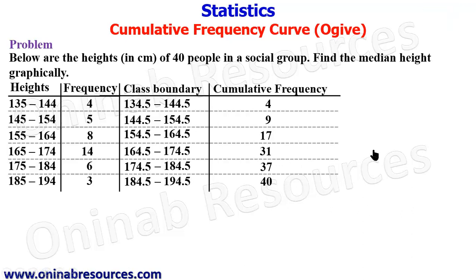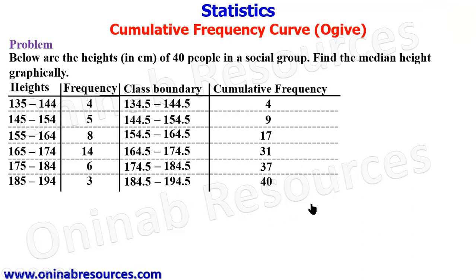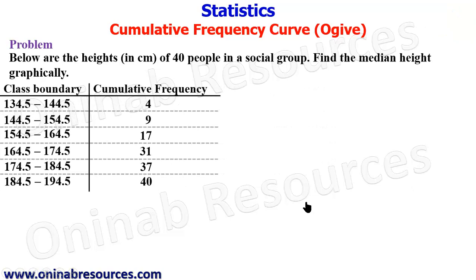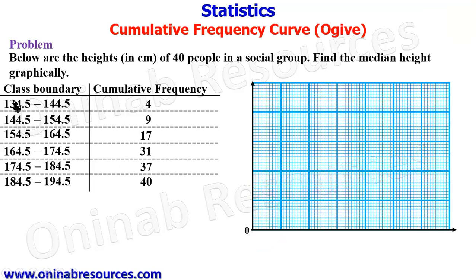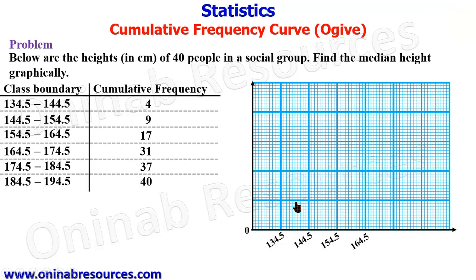This is what we are going to use to draw our graph. We are only interested in the last two columns, and in the second-to-last column we are interested in only the upper class boundary. So we shift the table to accommodate our graph. The x-axis is the upper class boundary and the y-axis is the cumulative frequency. At the origin, the upper class boundary of the previous class is 134.5 with a cumulative frequency of zero. Then the upper class boundaries are 144.5, 154.5, 164.5, 174.5, 184.5, and finally 194.5.